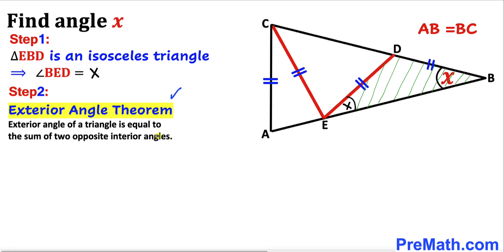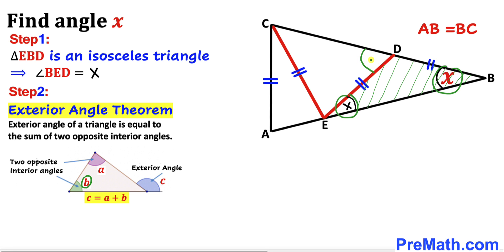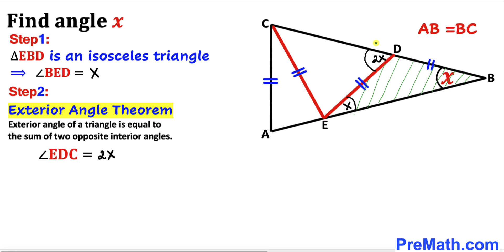An exterior angle of a triangle is equal to the sum of two opposite interior angles. As you can see in this diagram, angles A and B are our opposite interior angles, and angle C is going to be our exterior angle — in other words, C equals A plus B. So in our case, the two opposite interior angles give us X plus X, which makes 2X. Therefore angle EDC is going to be 2X.